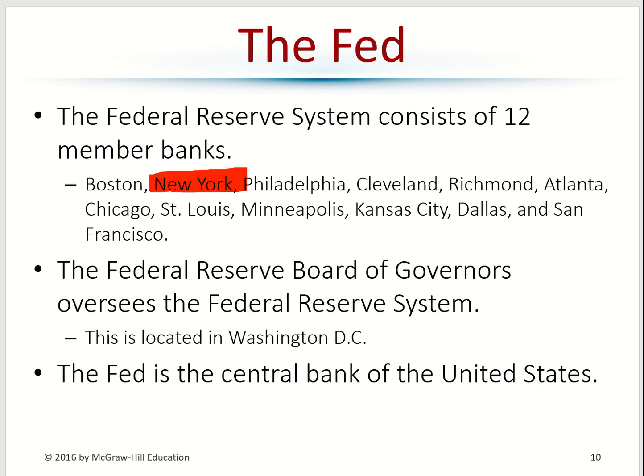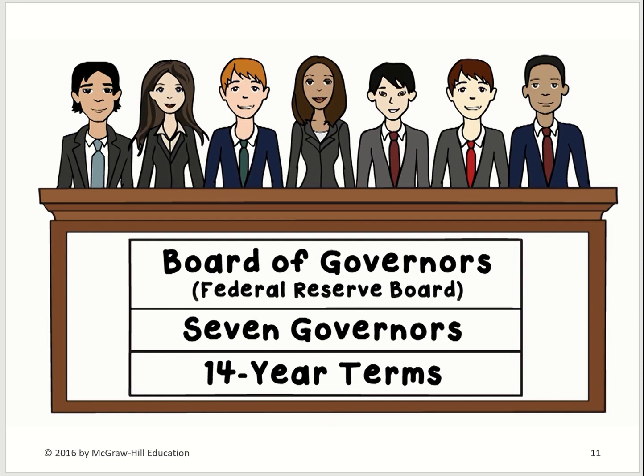The Federal Reserve Bank is governed by the Board of Governors, residing in Washington D.C. They meet on a regular basis to discuss the direction of the economy. The Board of Governors is made up of seven members. Each governor serves a 14-year term, and each one is appointed by the President and confirmed by the Senate.